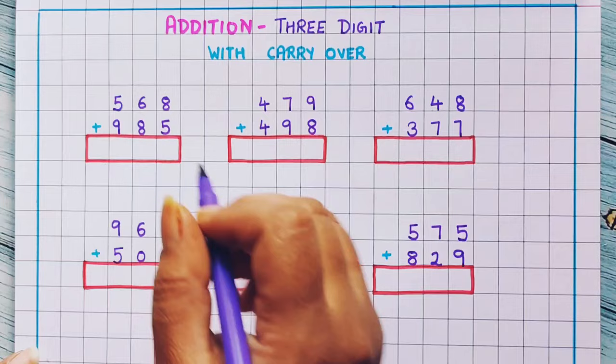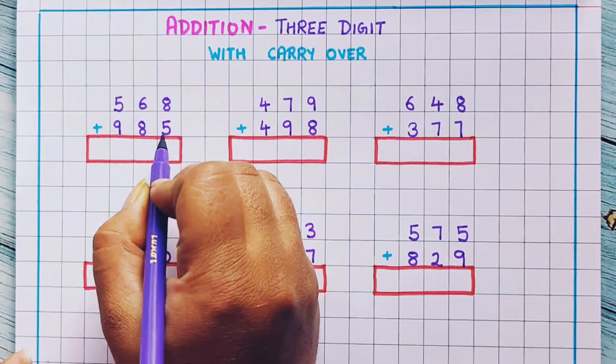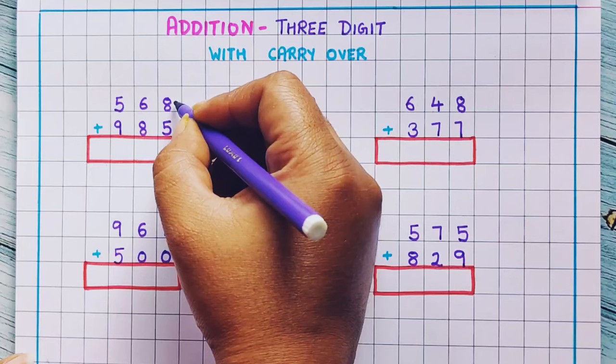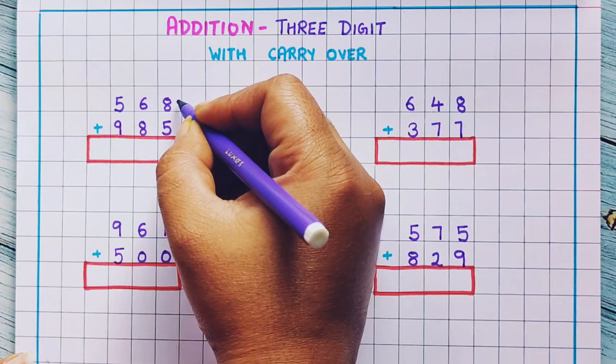Now see the first problem: 568 plus 985. Now we have already learned that we are going to start the addition from the ones place and then move towards the left. So let's do the addition. 8 plus 5 — you can put the higher number in your mind and then do the counting of the smaller number on the fingers.